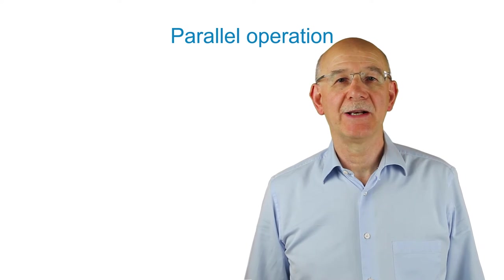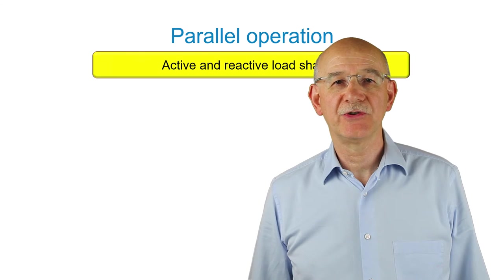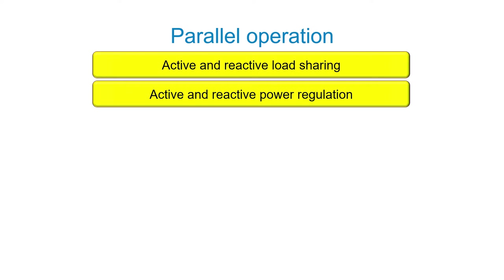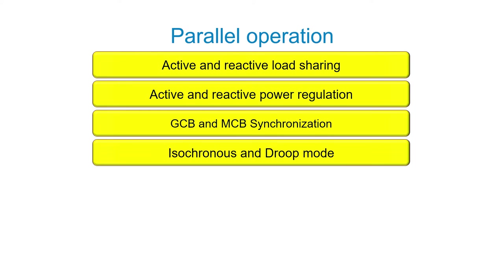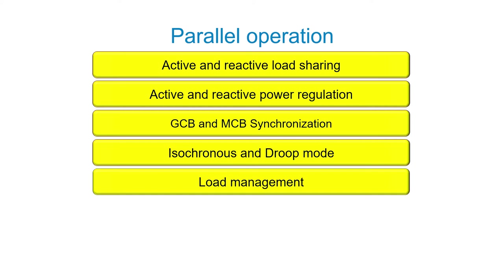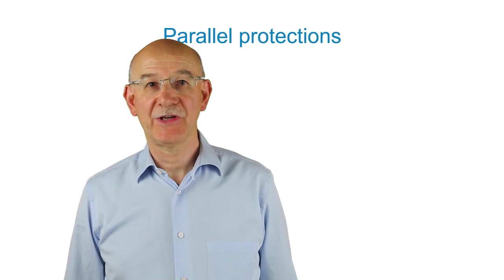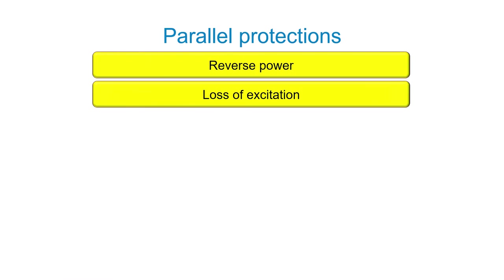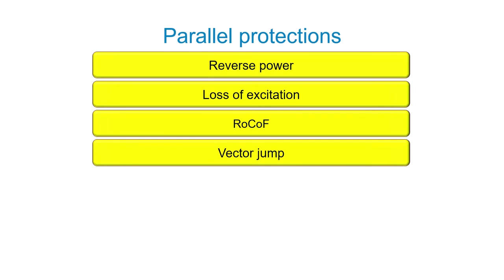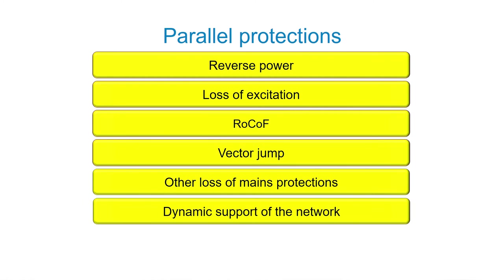The supported parallel operations are: active and reactive load sharing, active and reactive power regulation, GCB and NCB synchronization, isochronous and droop mode, and load management and smart load management. The controller is also fitted with parallel protection functions including reverse power, loss of field, rock off, vector jump, and other loss of mains protection and dynamic support of the network.